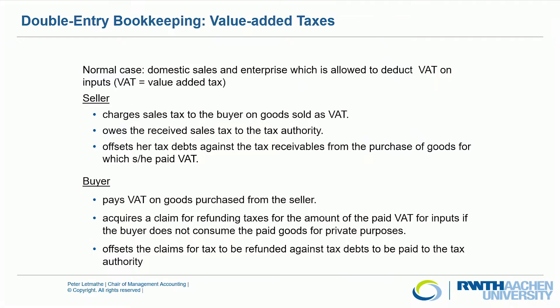If we now look at the different perspectives of the seller and the buyer: the normal case is domestic sales where an enterprise is allowed to deduct value-added tax on inputs. That means if I buy something, I pay this to the seller but then I will get it refunded from the financial authorities if I'm not the final private consumer of that product. So the seller charges the sales tax to the buyer on goods sold as value-added taxes.